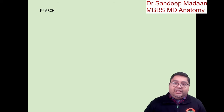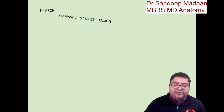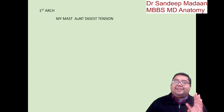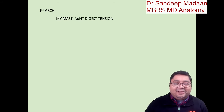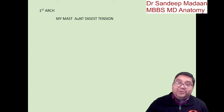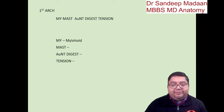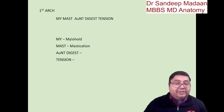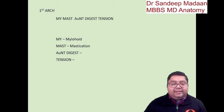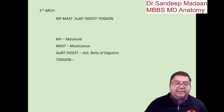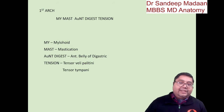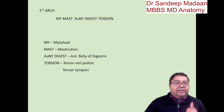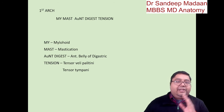Now, talking about the muscular derivative for the first arch, we will use this mnemonic: 'my must aren't digest tension.' From this mnemonic, 'my' will remind us of myelohyoid, 'must' will remind us of the muscles of mastication — the four muscles of that group — 'un-digest' means anterior belly of digastric, and 'tension' gives us two tensor muscles: tensor veli palatini and tensor tympani.